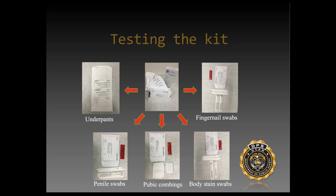If there's a hair that's different from the victim, we ask the nurses to collect that sample. If we have a pubic hair or head hair in that area, we'd cut the root off and then test that area later. The pubic combings, penile swabs, and underpants are a secondary type of evidence — not our first priority, but a catch-all. If we didn't get what we needed from the first tier, we go to this second tier of evidence.